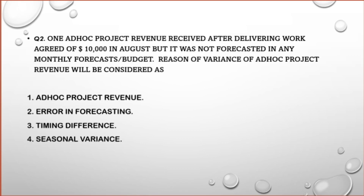Question 2: Ad hoc project revenue of $10,000 was received after delivering agreed work in August, but it was not forecasted in any monthly forecast or budget. So there was project revenue of $10,000 that we earned and received, but it was not included in any monthly budget or forecast. The reasons for the variance in project revenue will be considered as: (1) Ad hoc project revenue, (2) Error in forecasting, (3) Timing difference, (4) Seasonal variance.